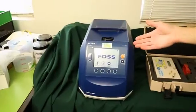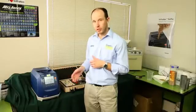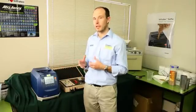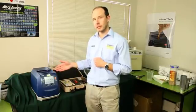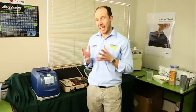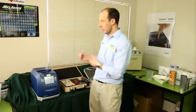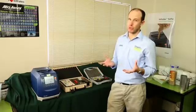Moisture meters like the FOS Infratec SOFIA and the FOS Infratec 1241 use near infrared light to measure the moisture. Because these two meter types use different technologies, they're affected by different things, and the readings that you get between the different types of meters are not always identical.